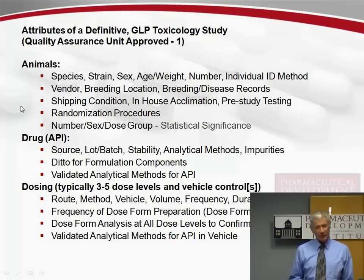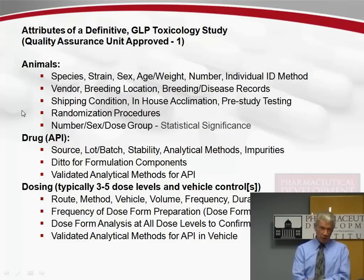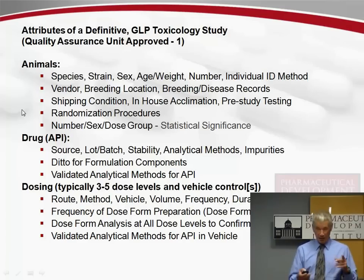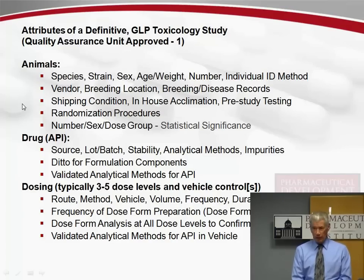The idea is that the animals have to be randomly distributed across the dose groups, and we describe the number and sex for each dose group. There is some statistical issue here — we set fairly high numbers because we want, at the end of the study, a sufficient number of animals survived, necropsied, and evaluated so we can feel statistically certain that what we see is real and not just a fluke. And we describe the drug — the active pharmaceutical ingredient — which comes from the chemistry manufacturing and control group. So what batch are we using, for example?